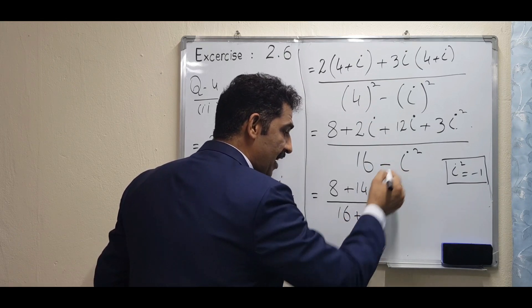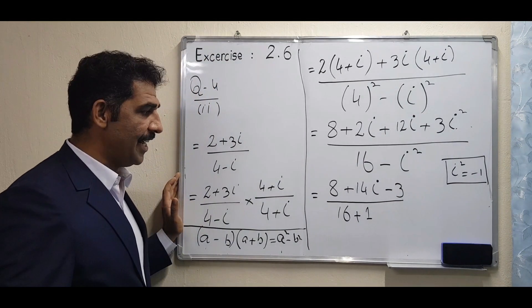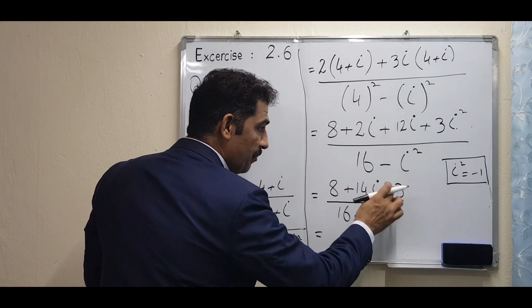If there is no number, it means which number is here? One, right. So what is the final answer? Eight minus three...